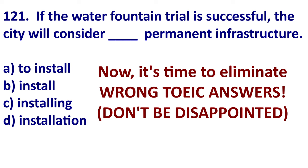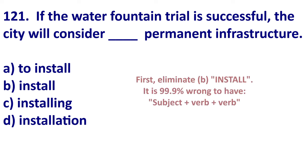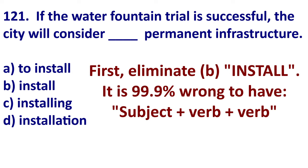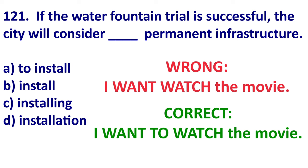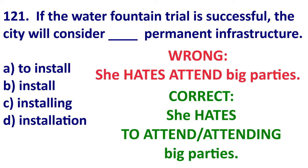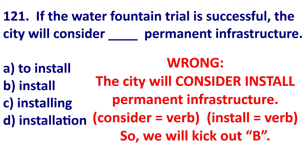So let's get the answer. First, eliminate B. You will almost never have verb plus base verb. For example, it's wrong to say: I want watch the movie — want is a verb, watch is a verb. Better: I want to watch the movie. One more example: she hates attend big parties — hates is a verb, attend is a verb, so this would be wrong. Better: she hates attending big parties, or she hates to attend big parties. So if we say the city will consider install — consider is a verb, install is a verb — no, it doesn't work. Take it out.